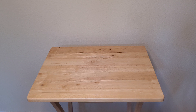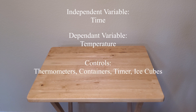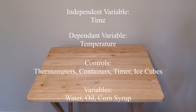In the box in the bottom right corner of the page, our independent variable is time, our dependent variable is temperature, and our controls are the same thermometers, containers, the timer, and the same three ice cubes. Our variables are water, oil, and corn syrup.